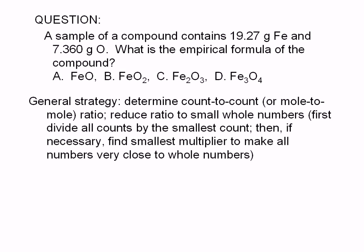Here's a general strategy for determining empirical formulas. You can determine empirical formulas if you have enough information to determine the relative numbers of atoms of different elements in the compound. In other words, you can get a count-to-count ratio for the atoms of the elements. Remember that moles are just group counts, so you can also use mole-to-mole ratio. Once you have determined the mole-to-mole ratio, all you have to do is reduce the ratio to a small whole number ratio.